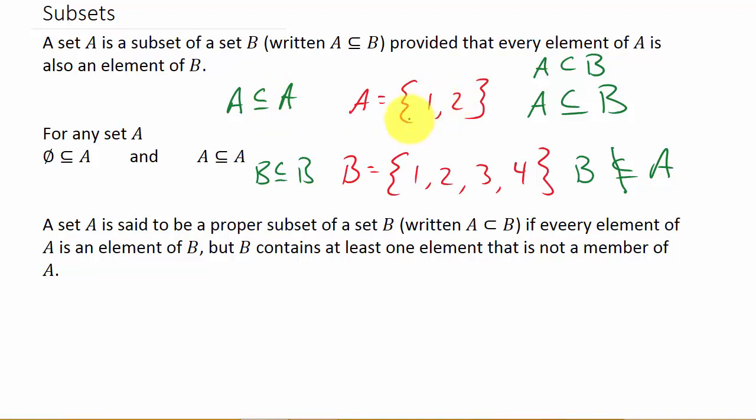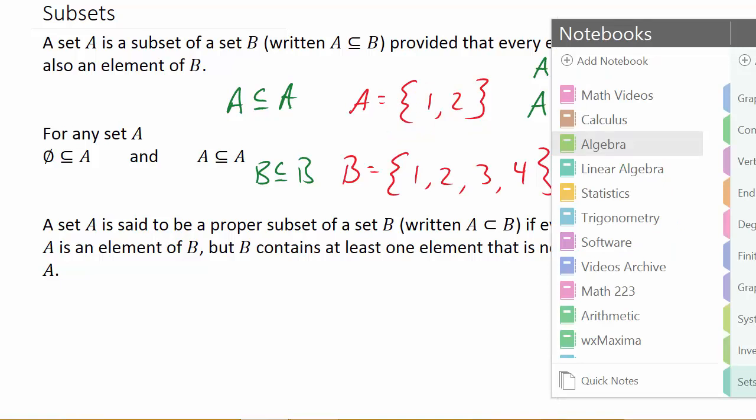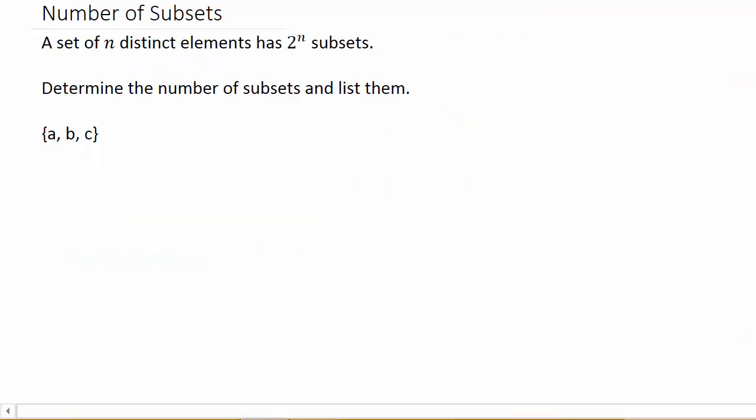All right, so that's just a quick little review on subsets. But here, they want us to determine the number of subsets and list them. So a set of N distinct elements has 2 to the N subsets. So how many subsets are we going to have? Well, let's calculate that. That's going to be 2 to the N.